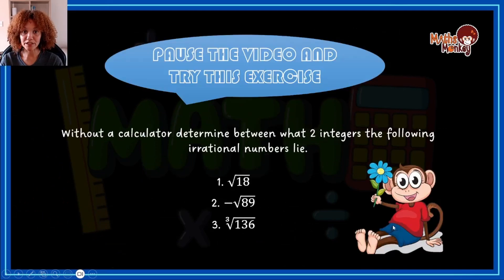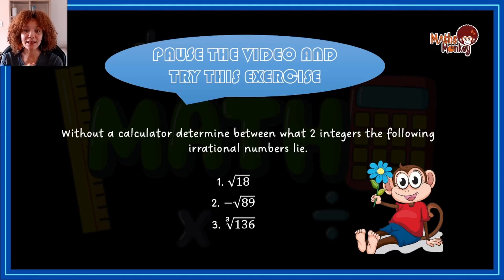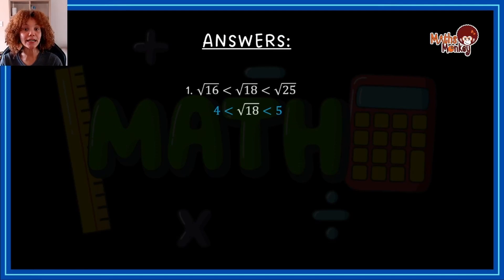Now that I've shown you how to do that, I'd like you to try this exercise on your own. Write it down and figure out, without using a calculator, between which two numbers these surds lie.